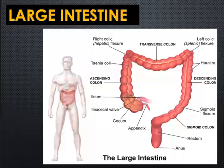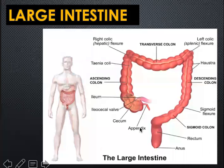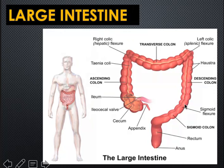Now let's go to the large intestine or bowel. It absorbs water and electrolytes and forms indigestible material that becomes feces. The large intestine includes: the cecum with ileocecal valve and appendix, the ascending colon, transverse colon, descending colon, sigmoid colon, and the rectum — where feces is stored prior to evacuation.